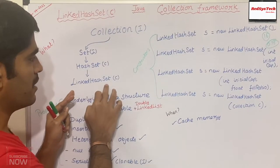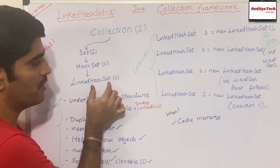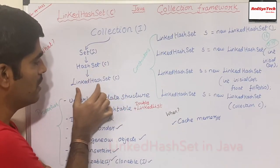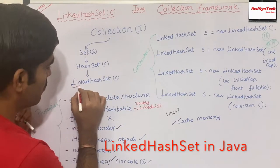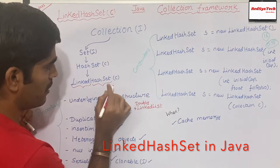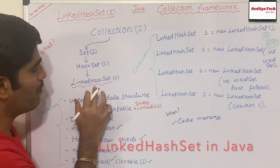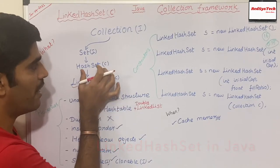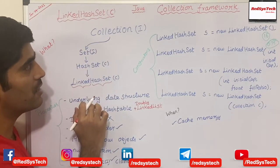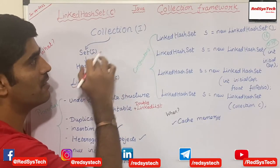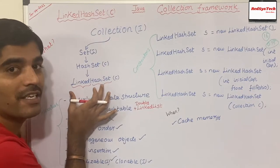So LinkedHashSet — from the name it seems like it is a child class of HashSet. There are two different terminologies we are using here. LinkedHashSet is a child class of HashSet, and HashSet we know is a class which implements the Set interface, and Set is an interface which implements the Collection interface. So this is the hierarchy of LinkedHashSet in Java.